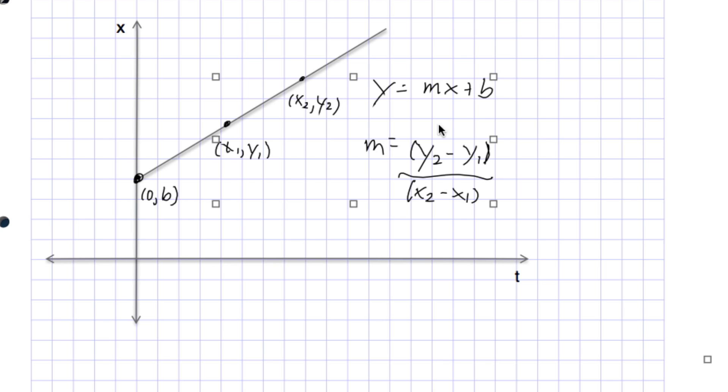And now what happens with these equations, all the stuff here, is that it actually changes to reflect real physics. So the equation of this line is actually given by x equals v naught t plus x naught.